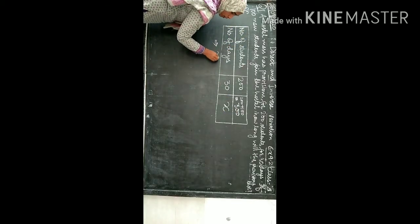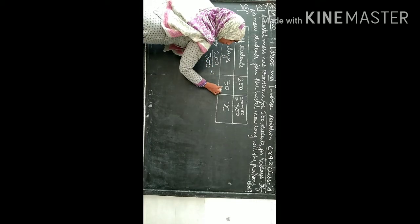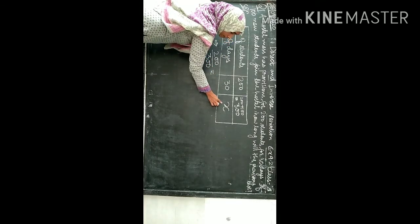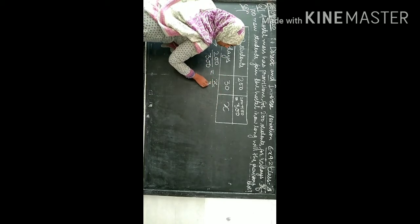Students ratio is 200 upon 300 and inverse ratio of days, x upon 30.